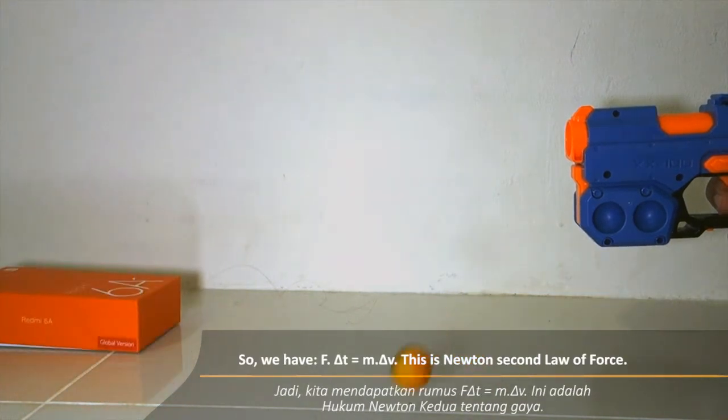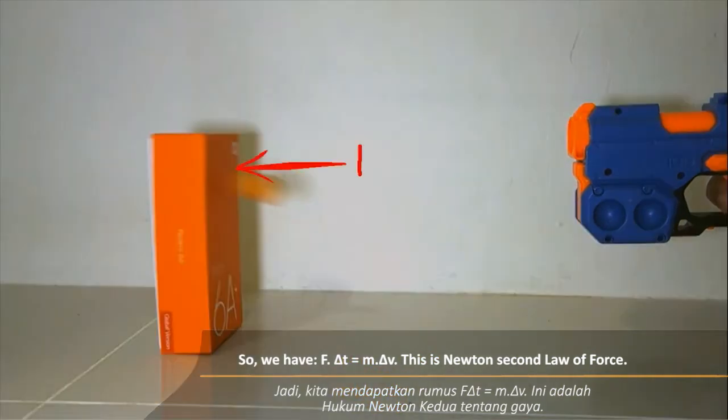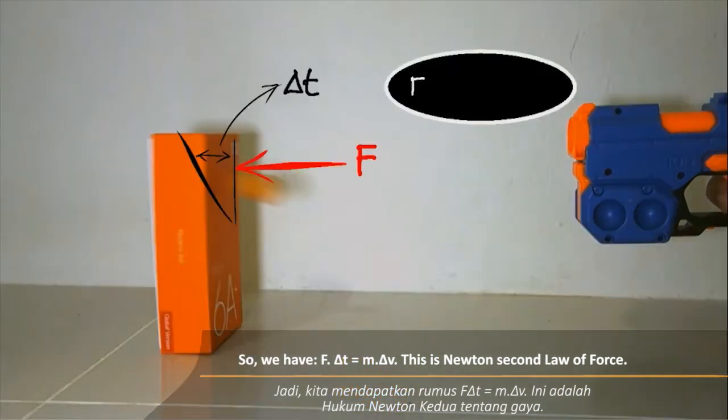So we have f times delta t equals m times delta v. This is Newton's second law of force.